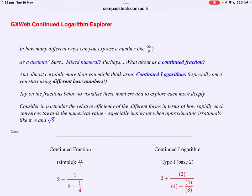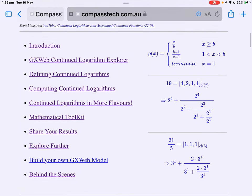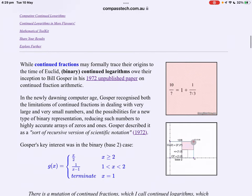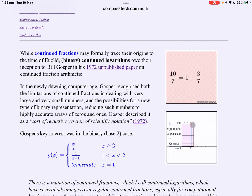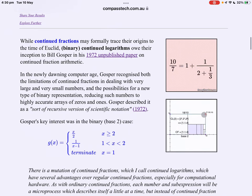Almost certainly more ways than you might think if you start using continued logarithms, especially once you start using different base numbers. Continued fractions can trace their origins all the way back to Euclid, but continued logarithms owe their inception to a gentleman named Bill Gosper in his 1970s unpublished paper on continued fraction arithmetic. In an appendix to that paper, he described a new type of continued fraction, one based on logarithms rather than whole numbers.